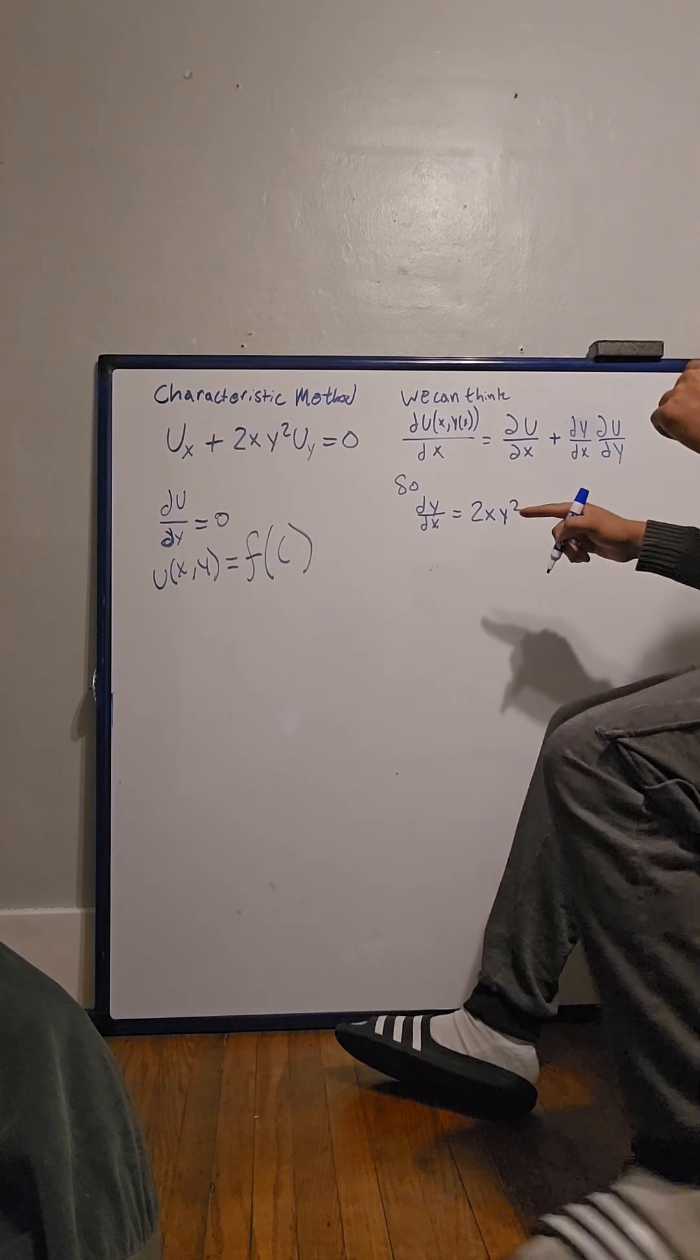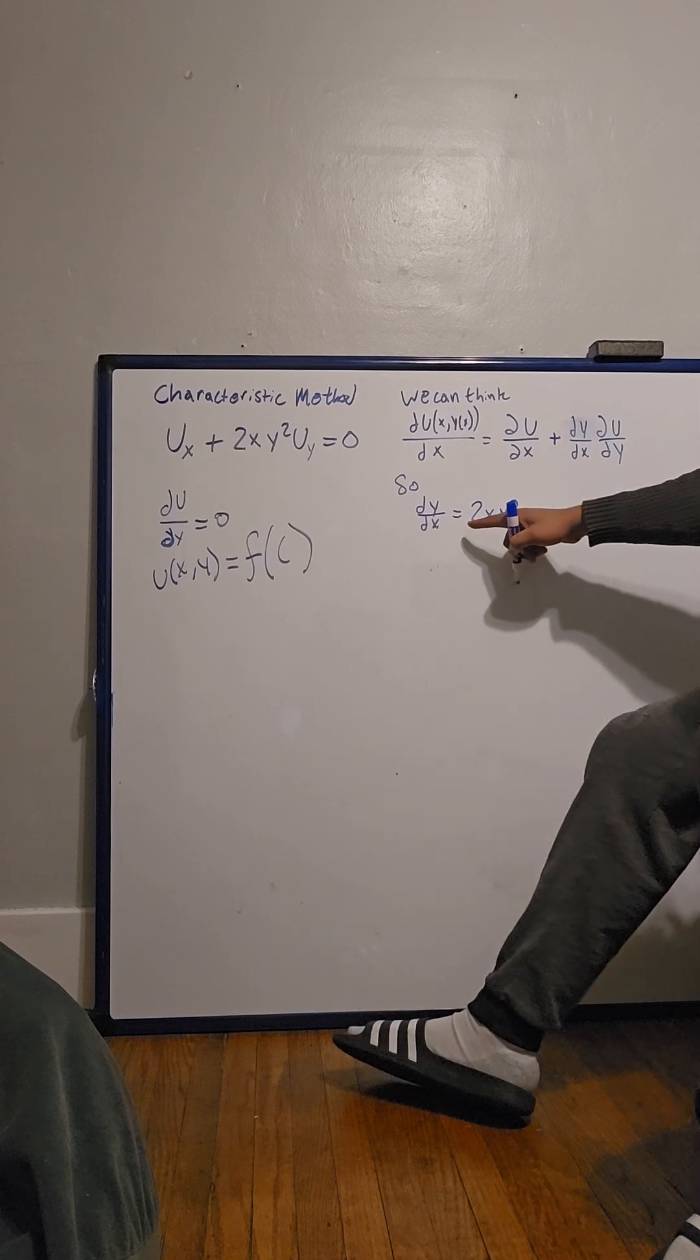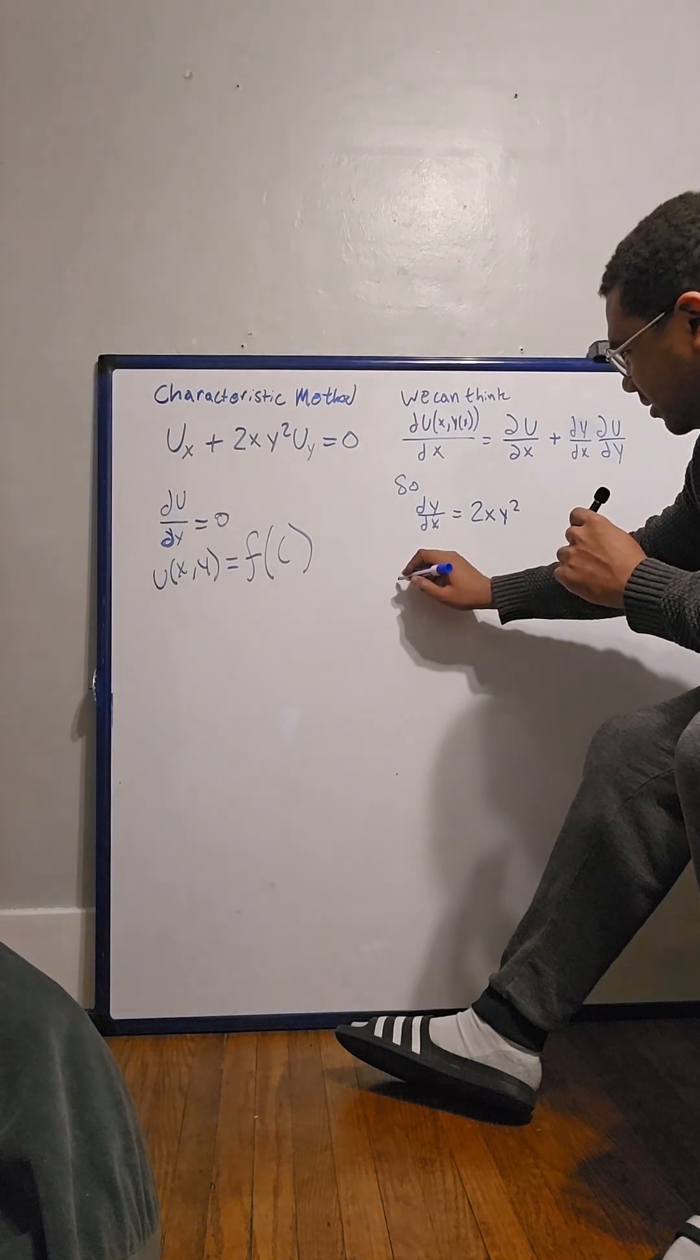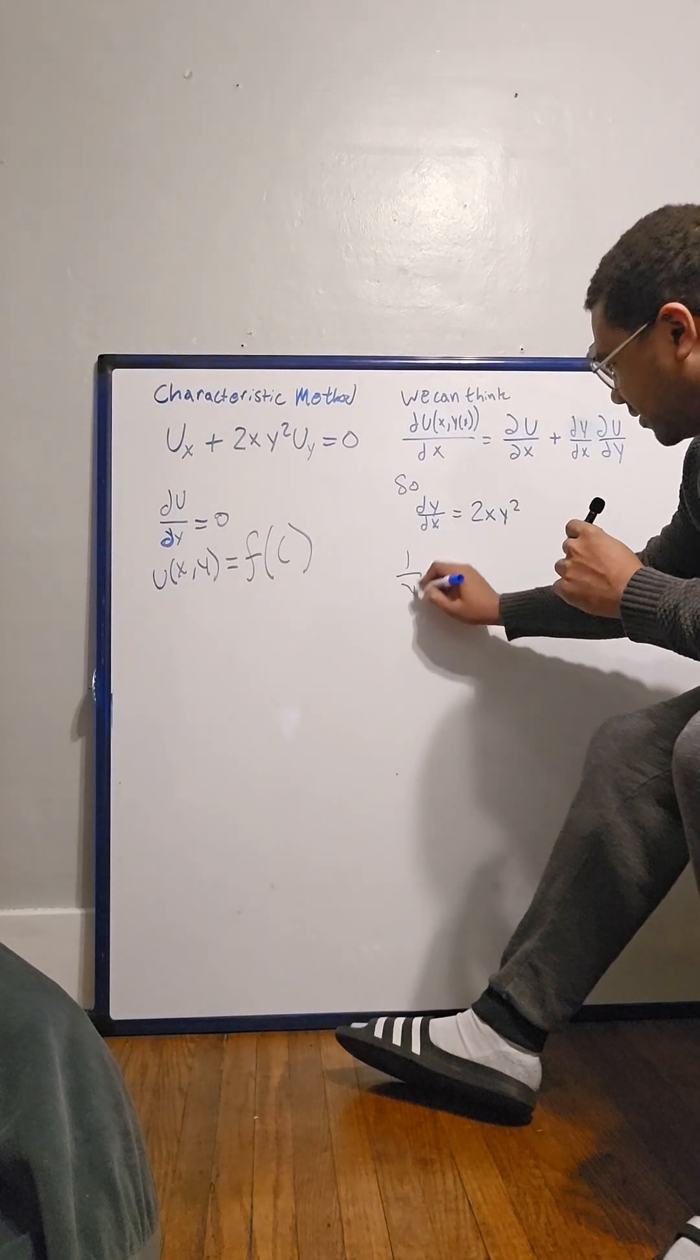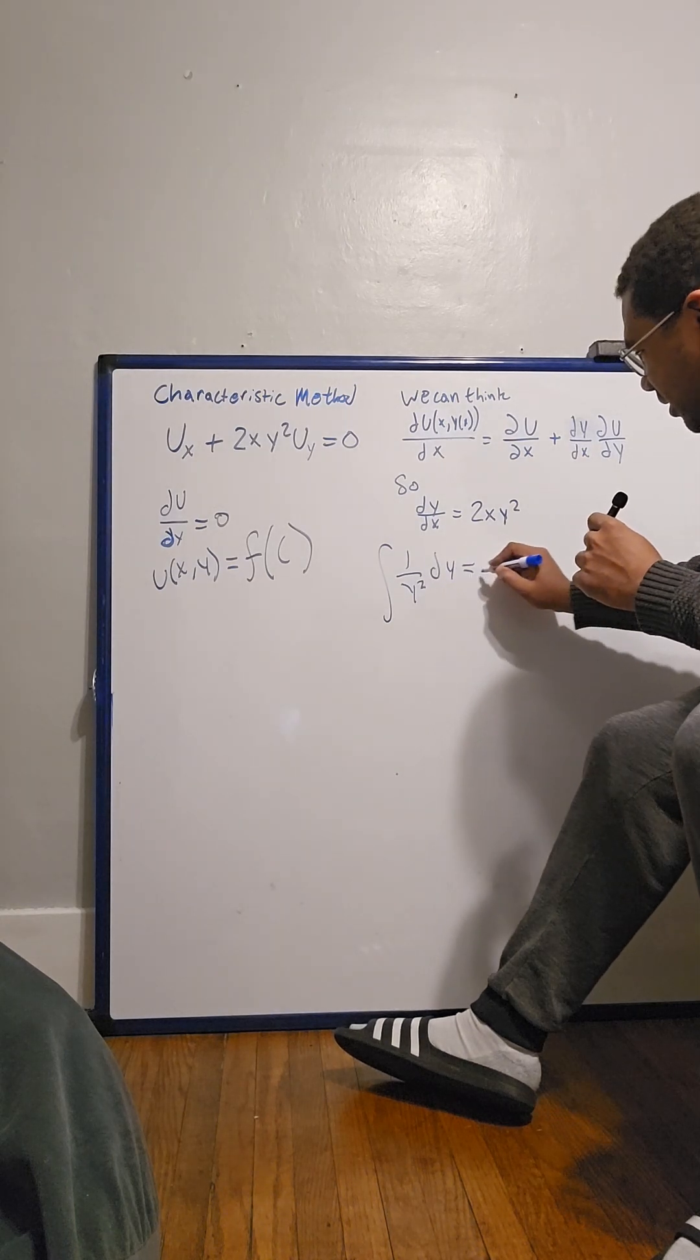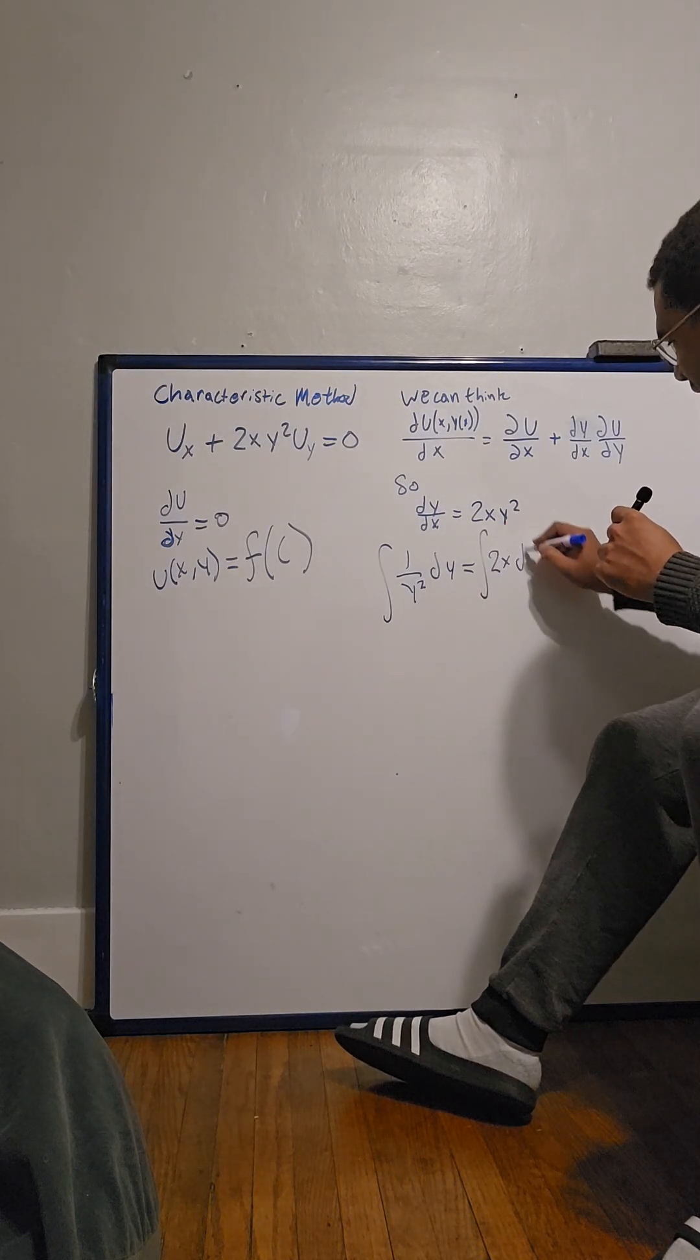So what do we have to do? We have to solve for dy dx, which ends up being one over y squared dy equaling 2x dx.